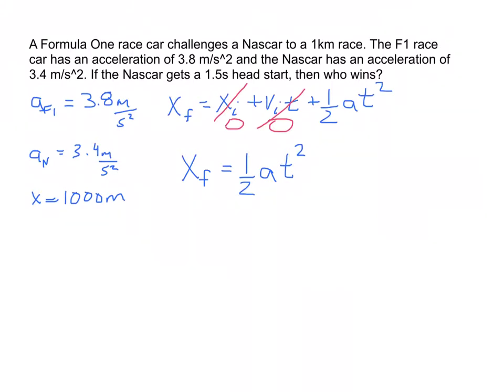So really all I'm left with is this final displacement equals one half the acceleration times t squared. So let's plug in our numbers. The final displacement is going to be 1,000 meters and we'll do the Formula One car first. So that's going to be equal to one half times 3.8 meters per second squared times t squared.